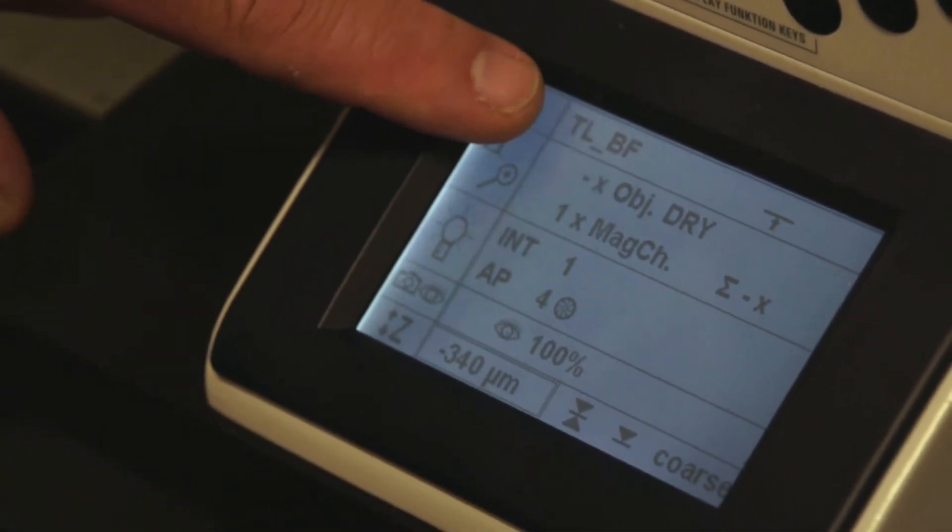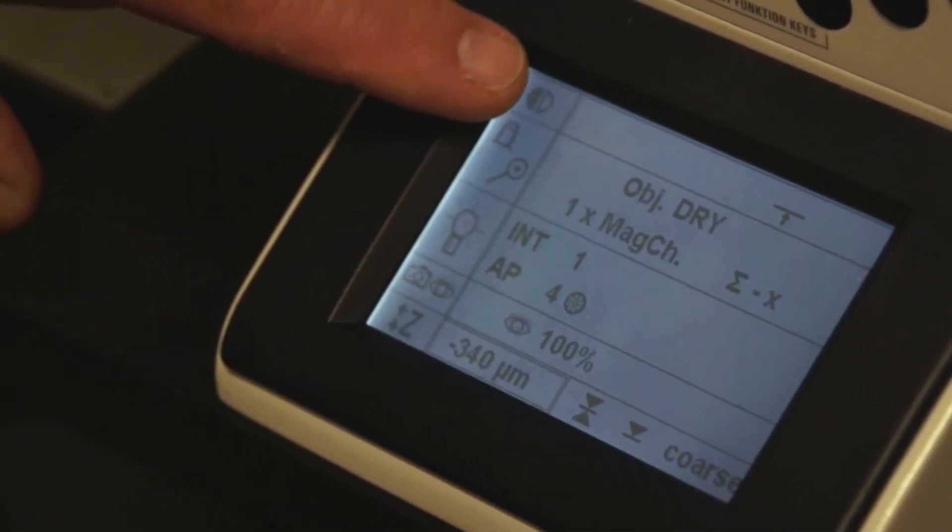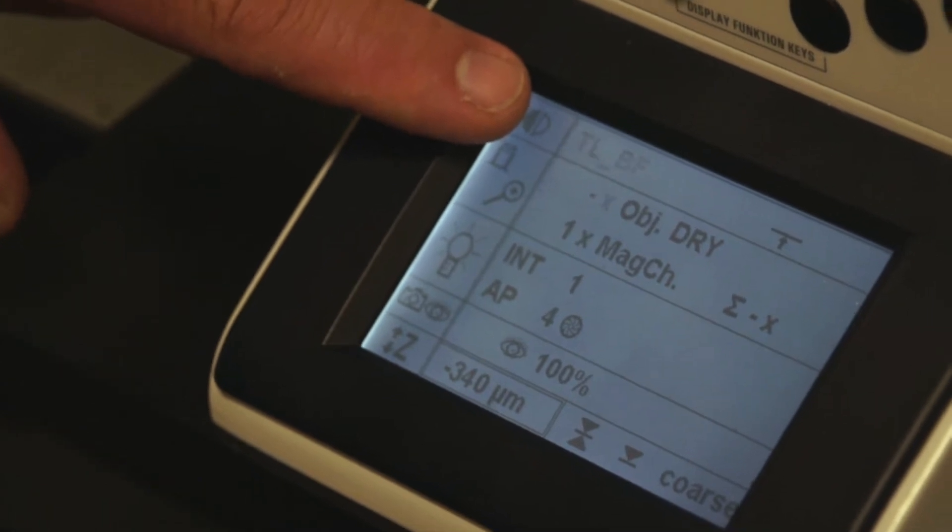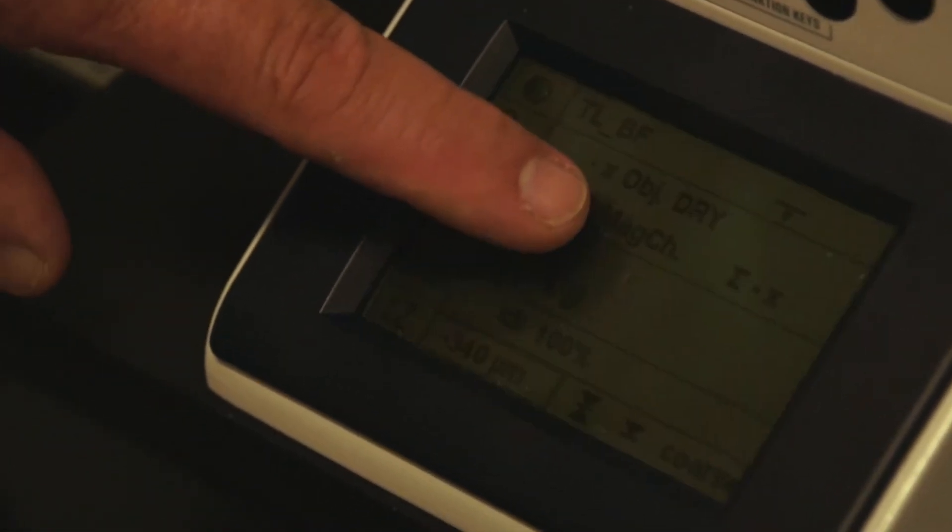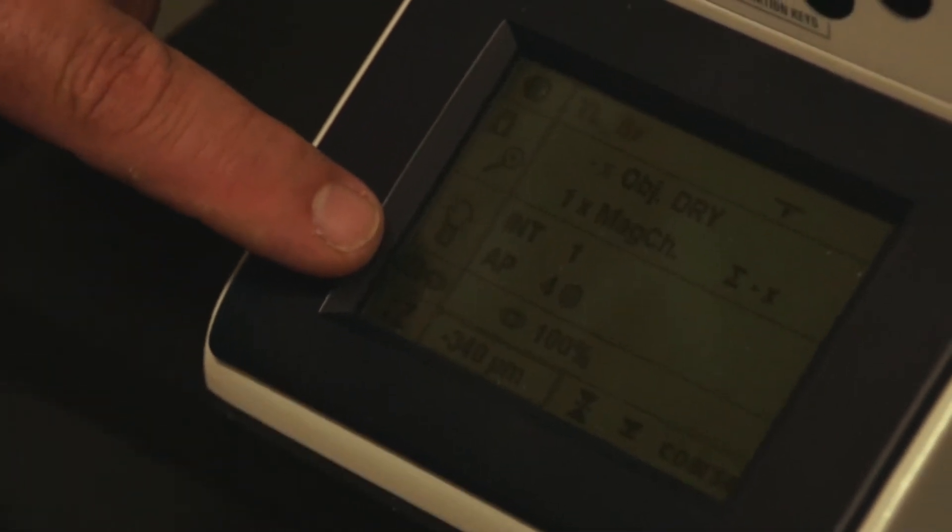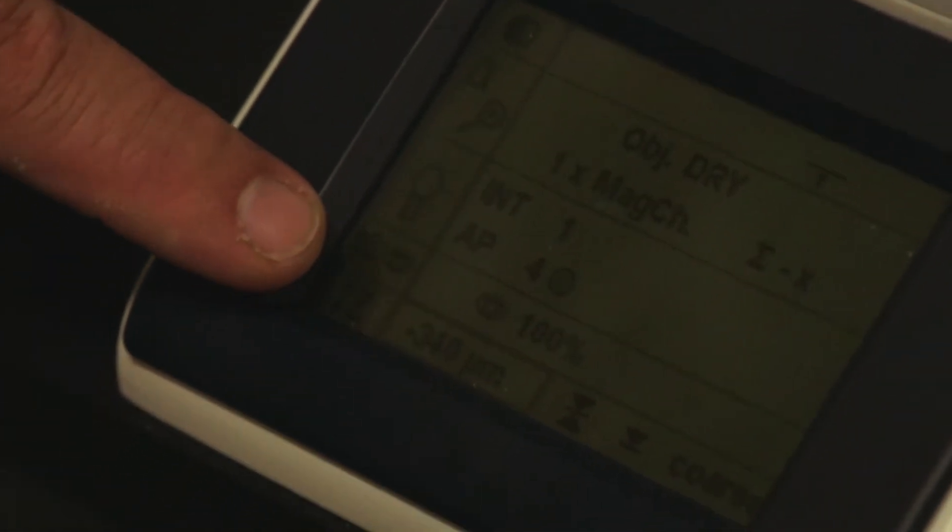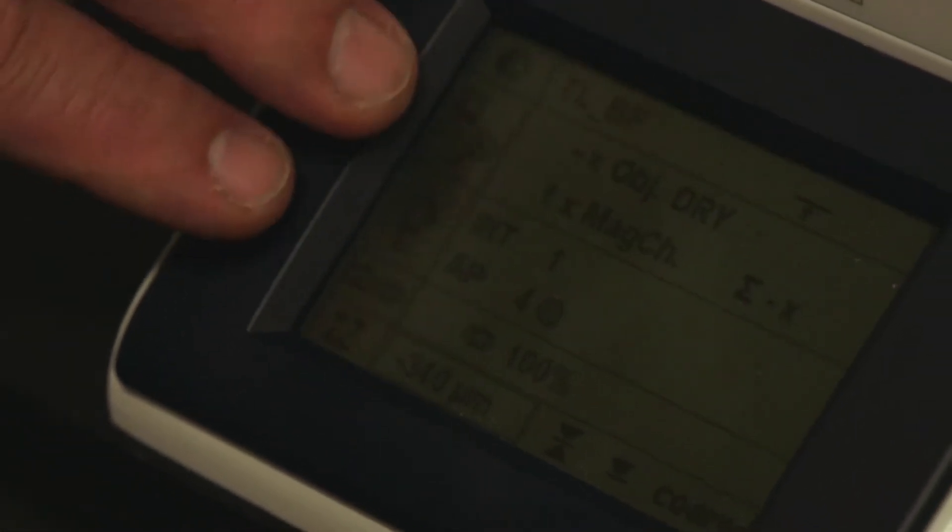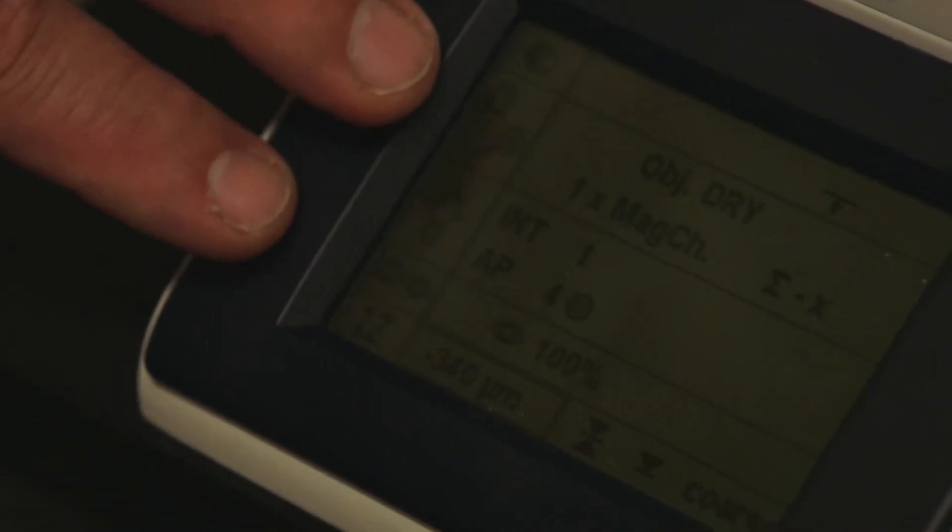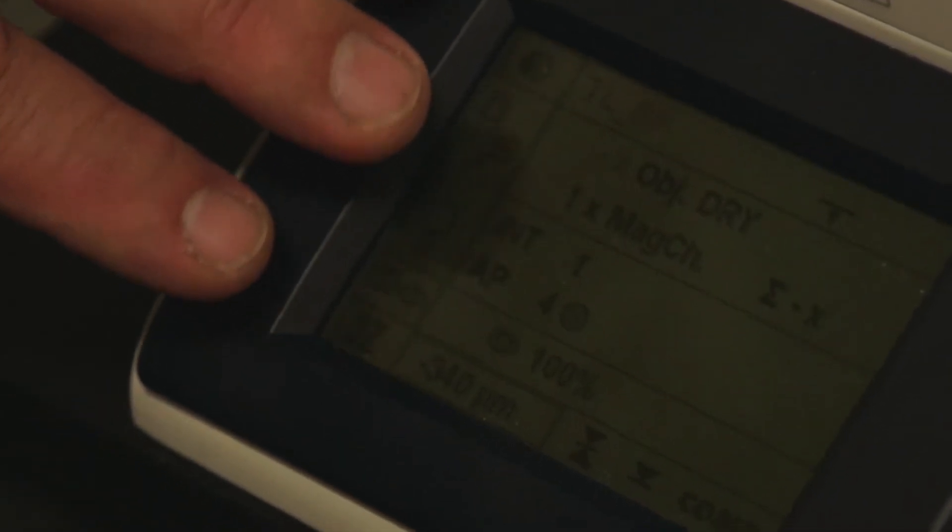But it's flashing because we don't have an objective in the beam path yet. It describes the information about the objective, whether or not the magnification changer is engaged, the intensity of the illumination, the size of the aperture diaphragm, and so forth. You will consult this screen from time to time while you're working with the microscope to make sure that all the parameters are correctly set.